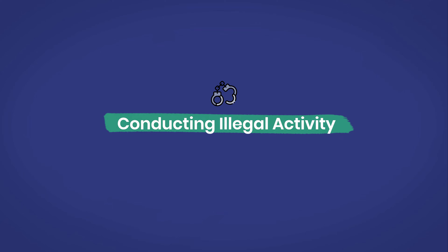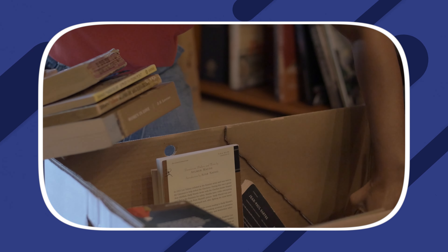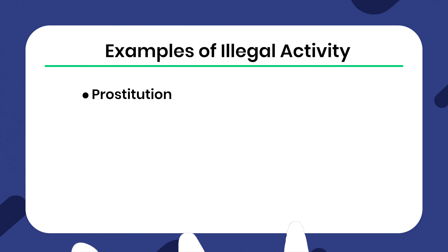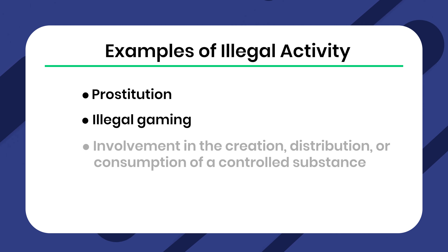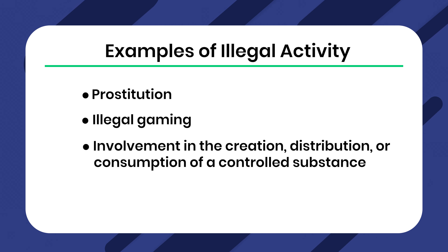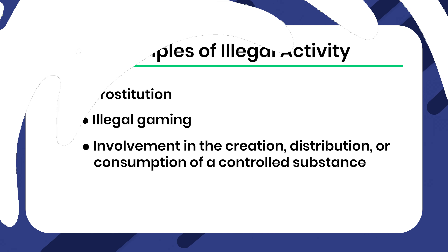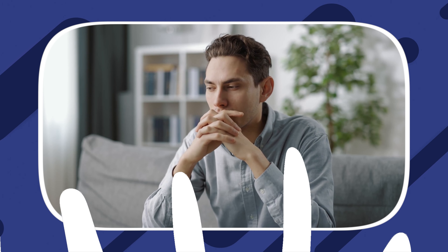If a tenant has engaged in illegal activity in the state of Missouri, the landlord is required to give them a written 10-day notice to quit. This provides the tenant with 10 days to move out of the rental property before the landlord can file an eviction lawsuit. Examples of illegal activity include, but are not limited to, prostitution, illegal gaming, and involvement in the creation, distribution, or consumption of a controlled substance. The landlord can begin filing for eviction if the tenant remains on the property after 10 days.